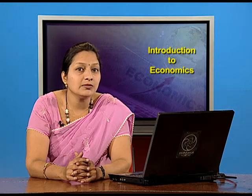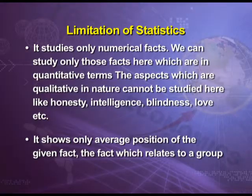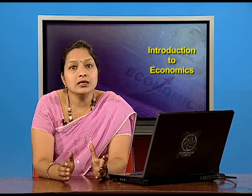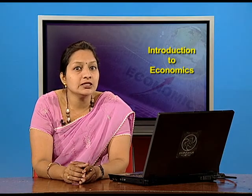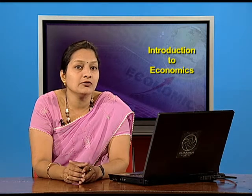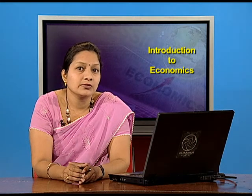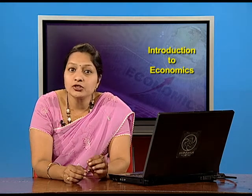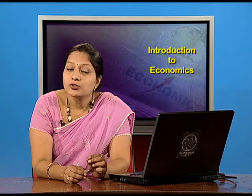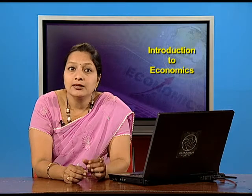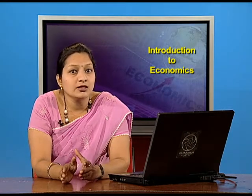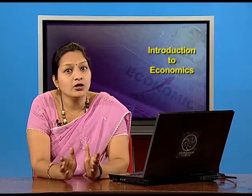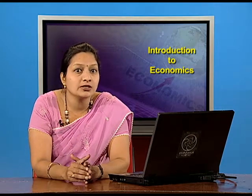Its second limitation is that it shows only the average position of a given fact relating to a group. It does not give information of each and every individual of the universe. It gives the average of all, so it should be kept in mind that some individuals' results may be far better or far worse than the average.